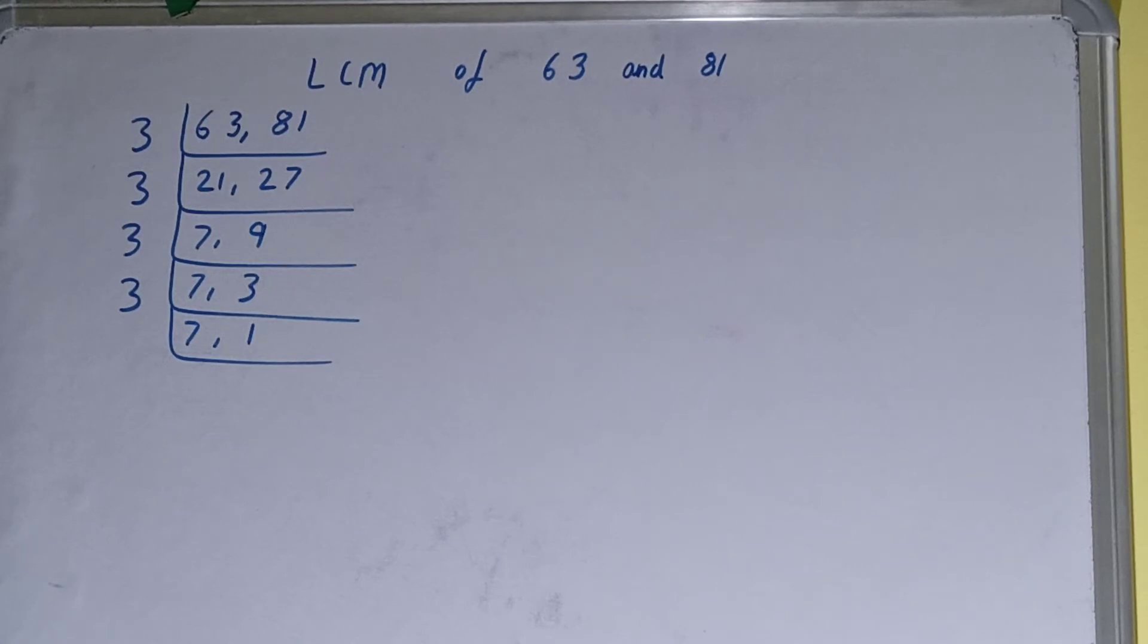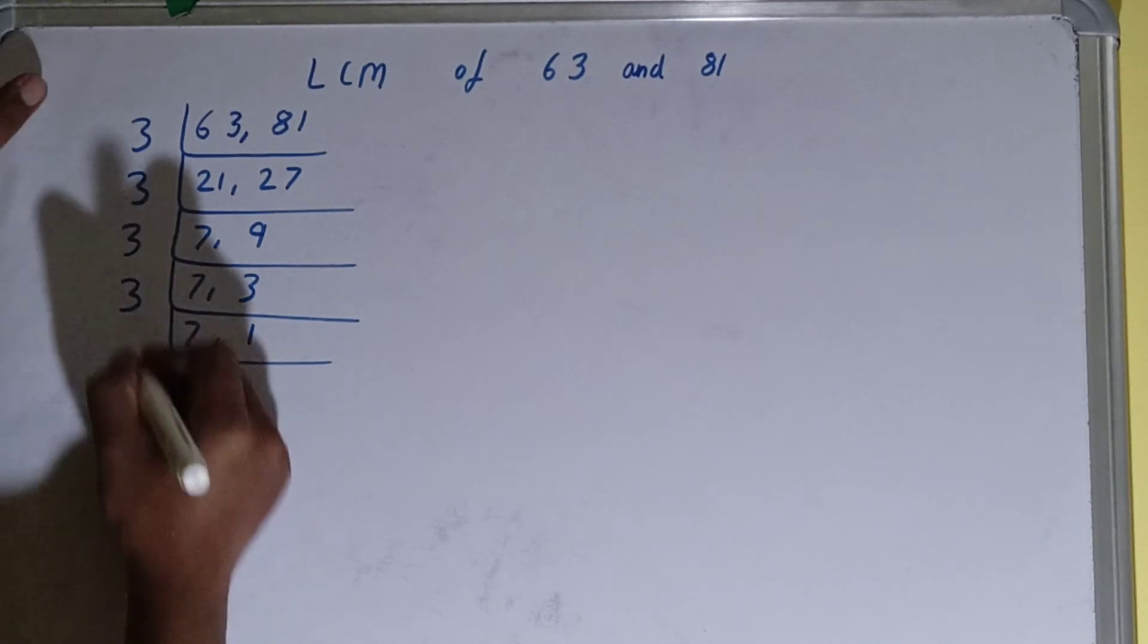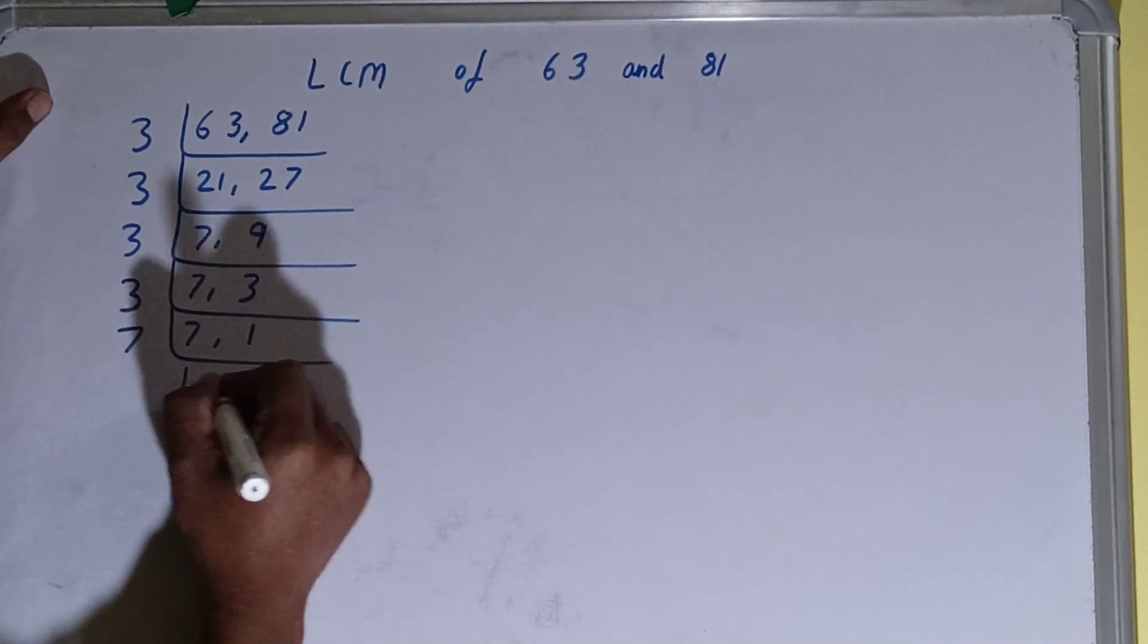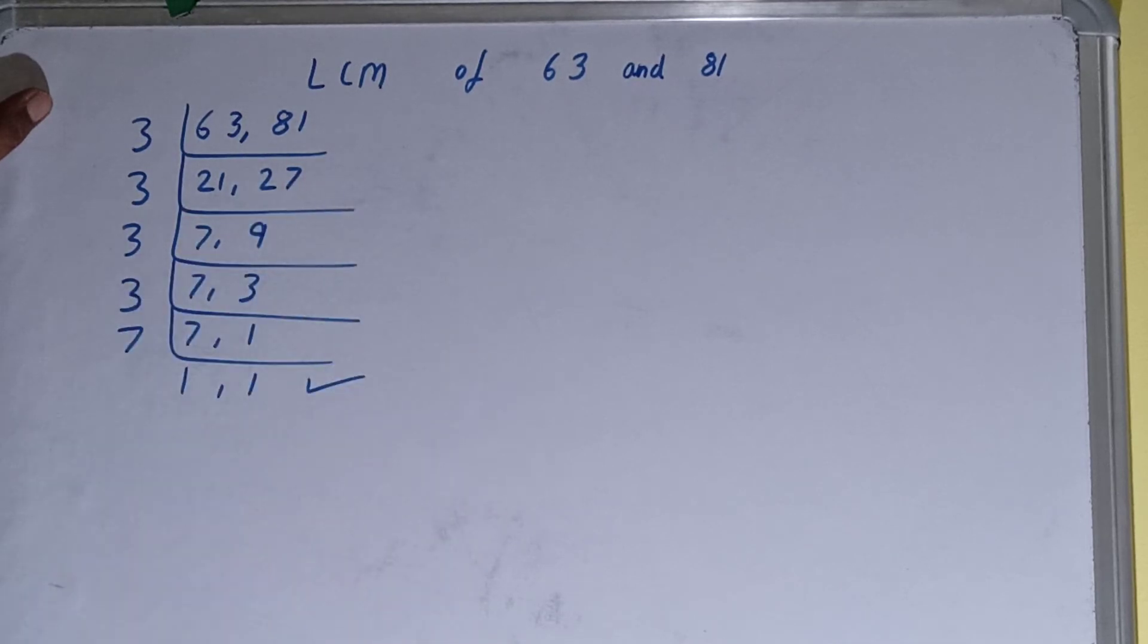Now if we check, then none of the numbers is divisible by 3. And on that, if we see the number 7, it is a prime number. That means it can be divided by itself only, and when we'll do so we'll get 1, 1.